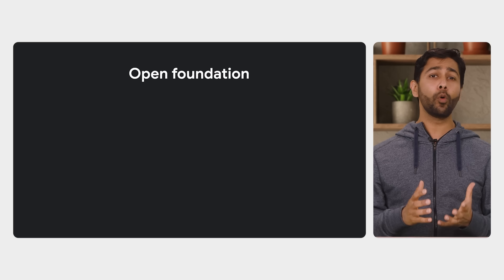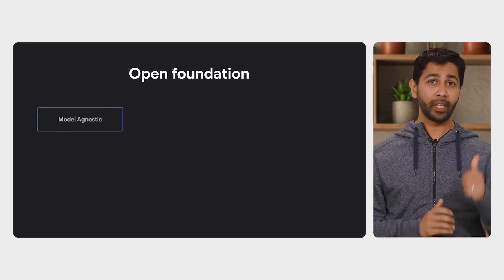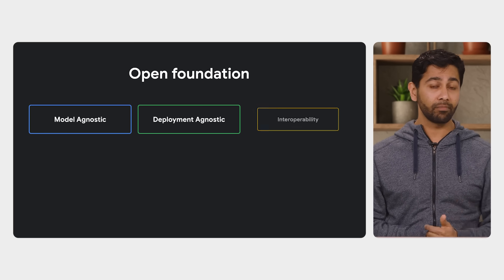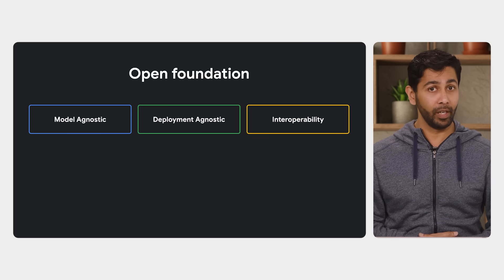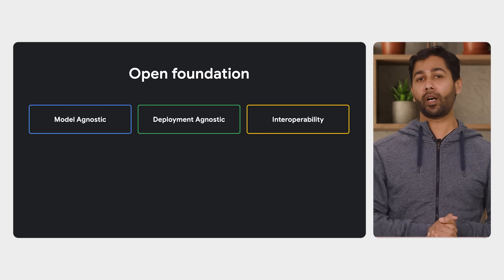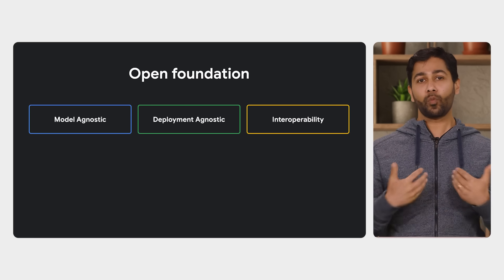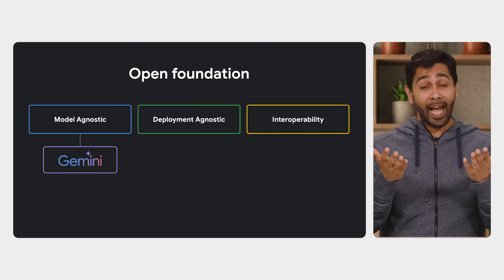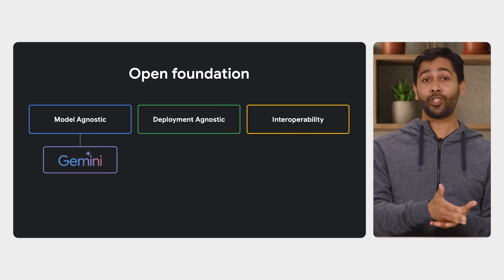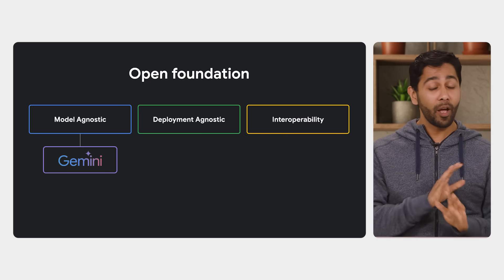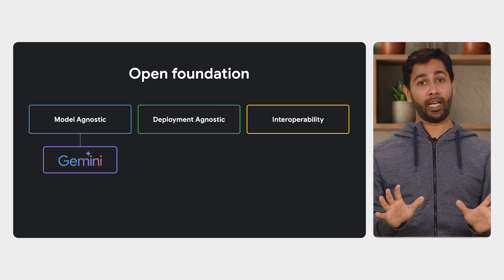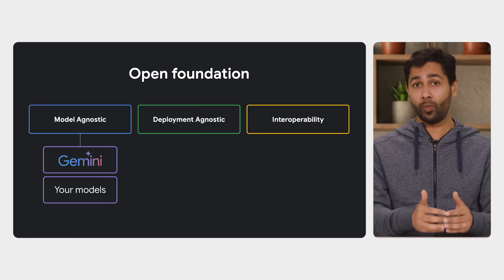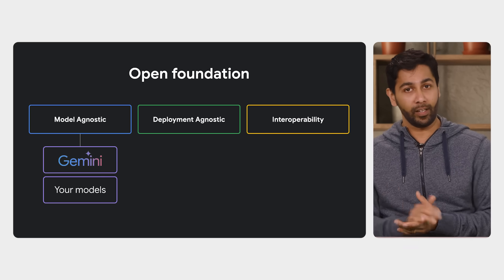To us, a truly open foundation means it is model agnostic, deployment agnostic, and built for interoperability. Starting with model agnostic — we obviously love our Gemini models, and especially the latest Gemini 2.5 Pro model, which has amazing reasoning capabilities. But with ADK, you can choose any model you want to use, whether it's a model from Google or anywhere else.